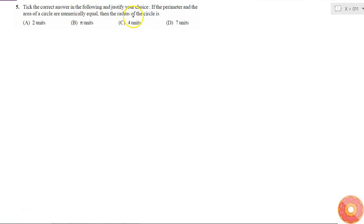Tick the correct answer in the following and justify your choice. If the perimeter and area of a circle are numerically equal, then the radius of the circle will be: 2 units, pi units, 4 units, or 7 units.